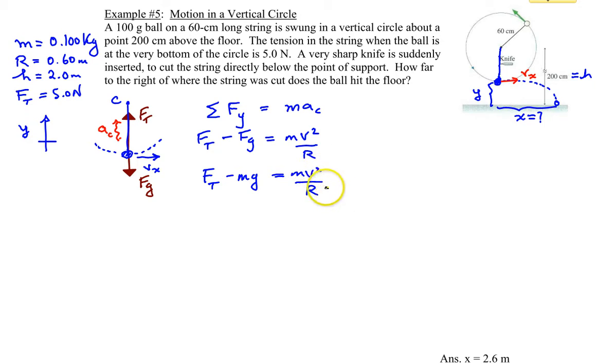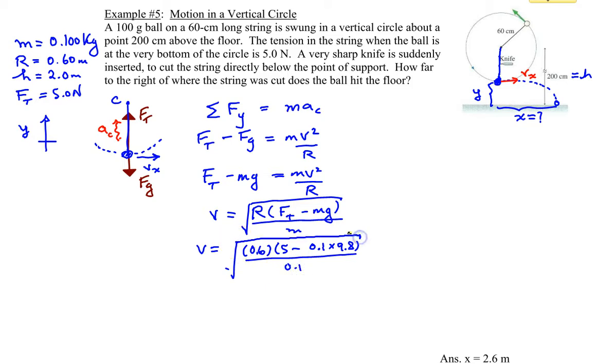So rearrange the equation and solve for v. So v would be equal to r times the tension minus mg and then divided by the mass and the square root of that whole thing. So go ahead and plug in your values and see what you get. You have 0.6 for the radius, the tension is 5, the weight is 0.1 times 9.8 and then the mass is 0.1 and we're taking the square root of that whole thing. And that gets you a velocity of 4.91 meters per second.